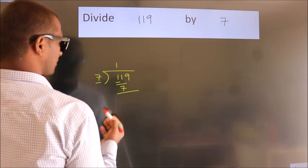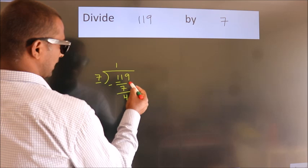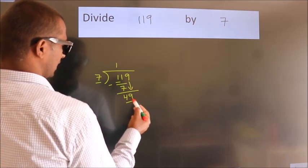Now we should subtract, we get 4. After this bring down the beside number. So 9 down, so 49.